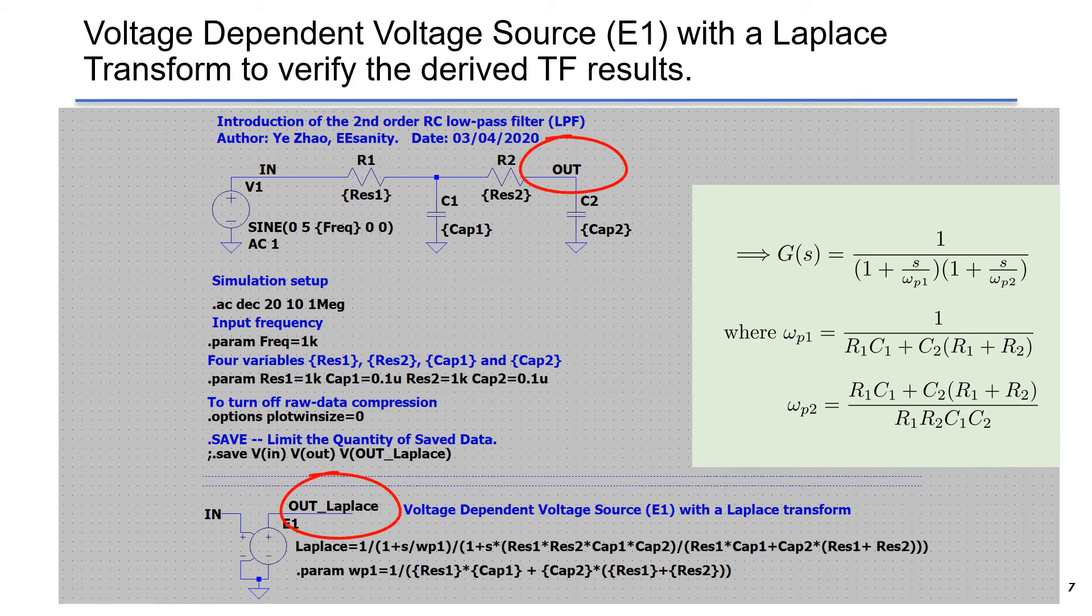On the bottom side of the schematic, we have a voltage-controlled voltage source E1 using Laplace transform. The Laplace transform is using the canonical form to simulate the second-order low-pass filter behavior.